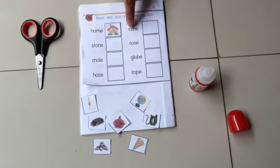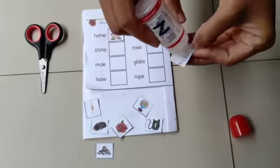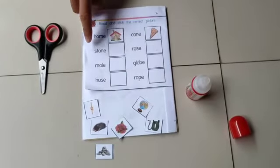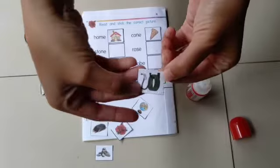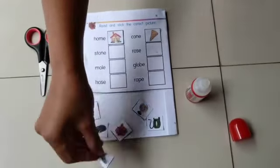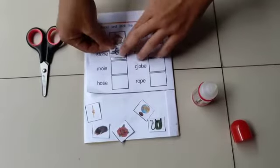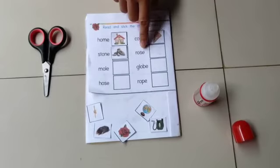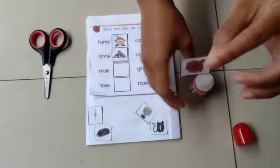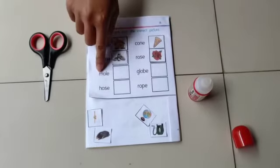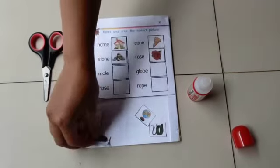The second one is cone. Where is the cone? You can take it and then stick it inside the box. We're going to move to the next one: rose. You found it and then stick it. And then we have mole. Where is the mole? Let's catch the mole before it's running away.